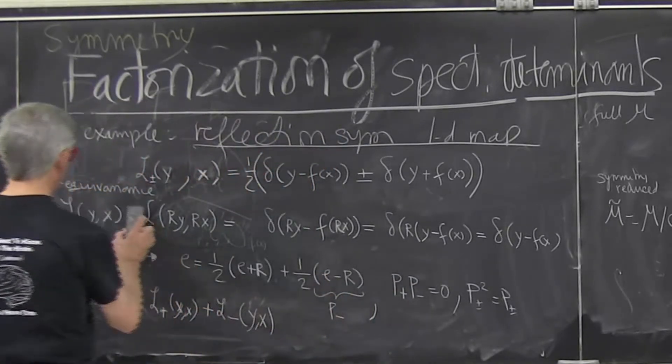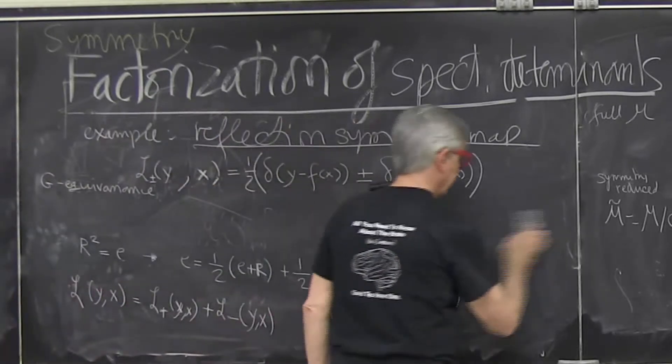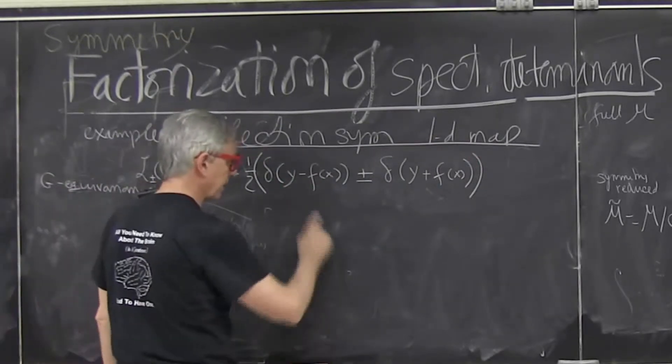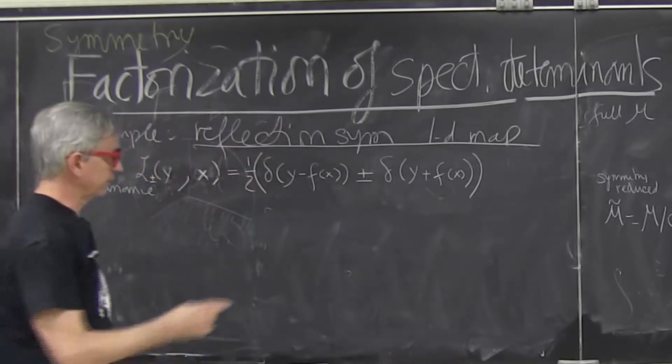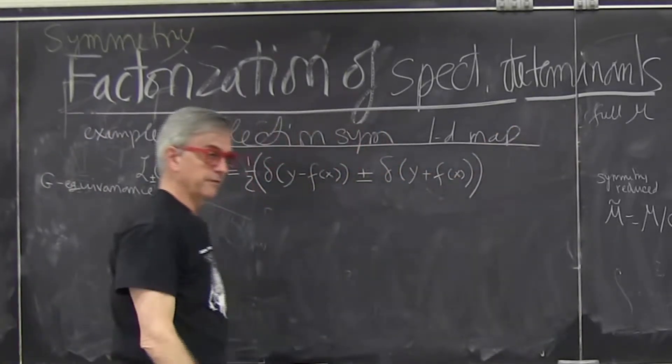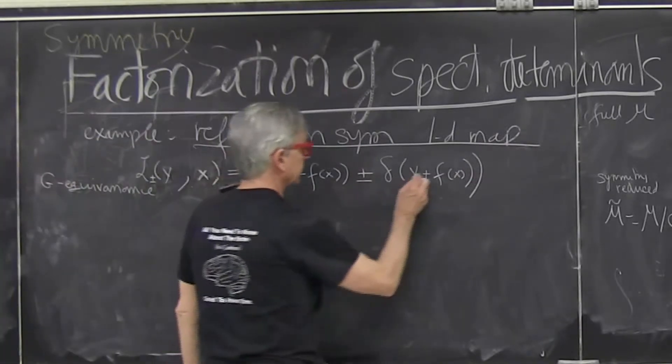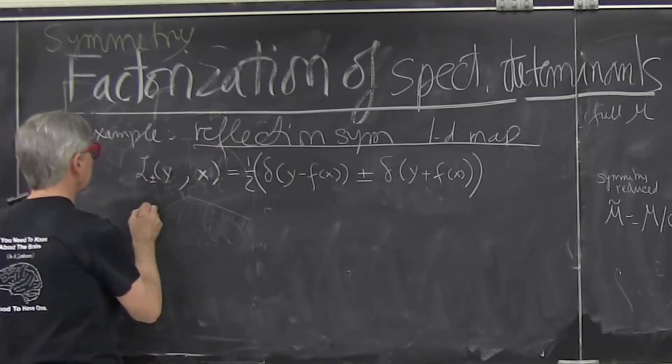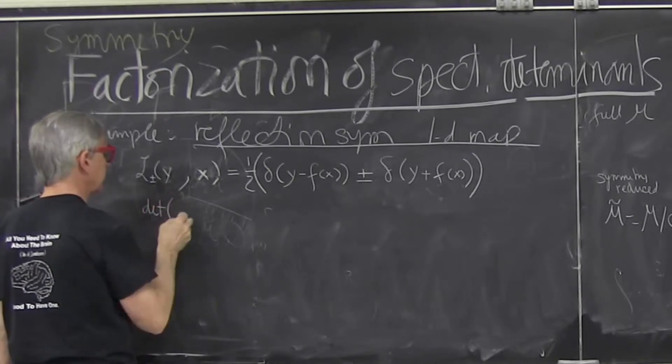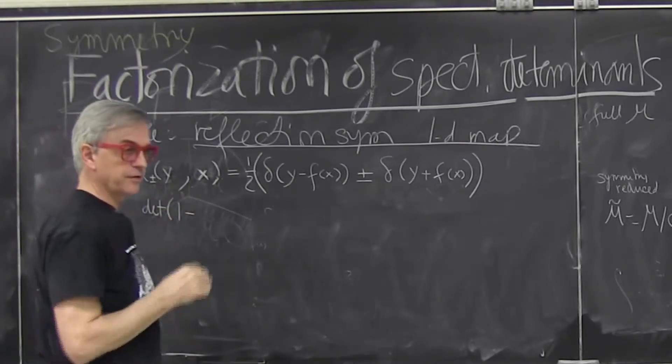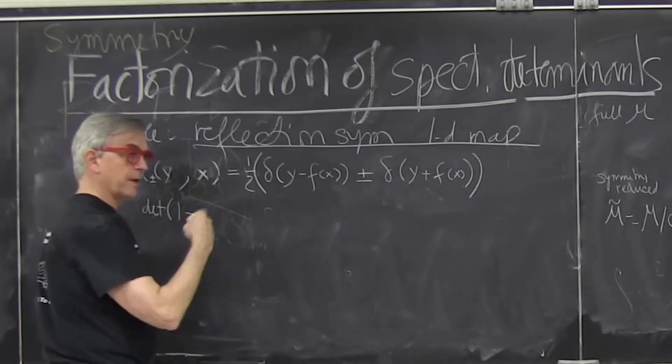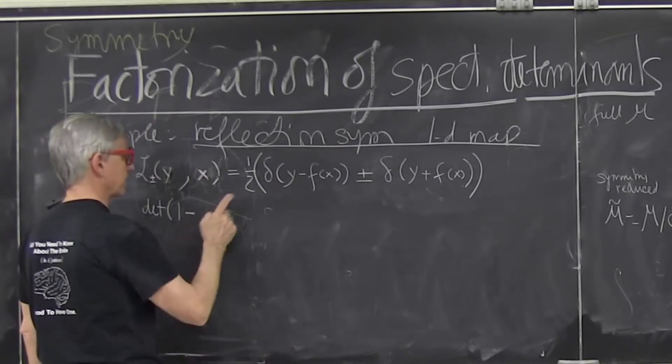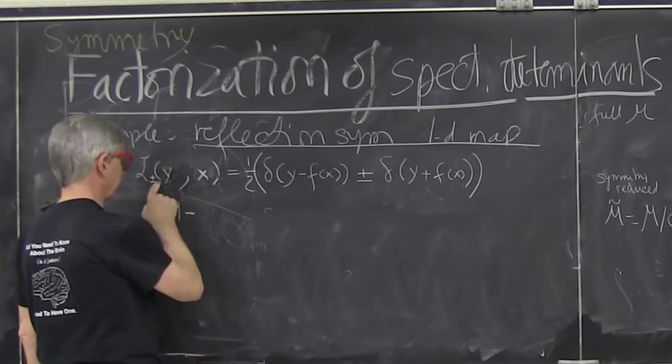Our goal was to compute determinant of evolution operator. At the moment I'm just looking Perron-Frobenius, but as we did for diffusion, I could put a weight here. But for simplicity I don't do it. The crucial thing is that our goal is to compute the determinant of this evolution operator because its spectrum will tell us what the natural measure is and how the long-time correlations behave, how things decay to natural measure. That will be controlled by the eigenvalues of this operator.